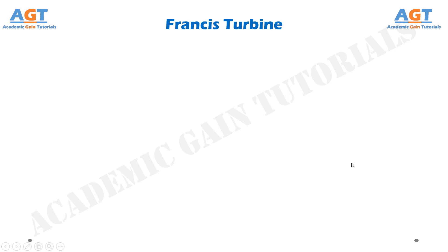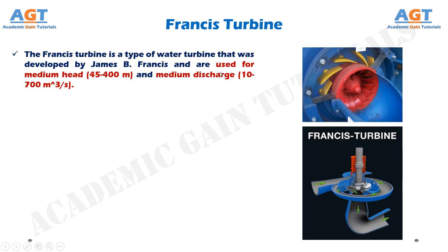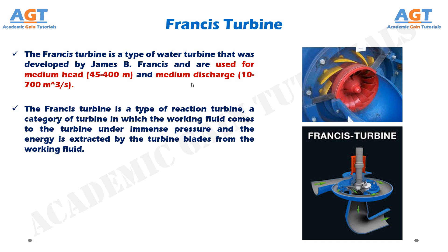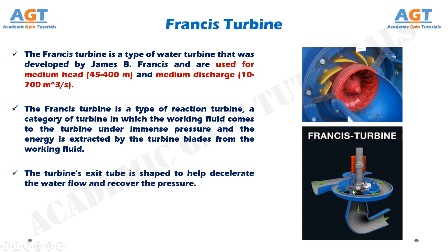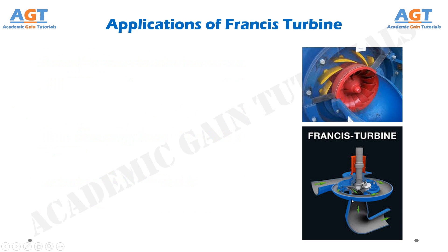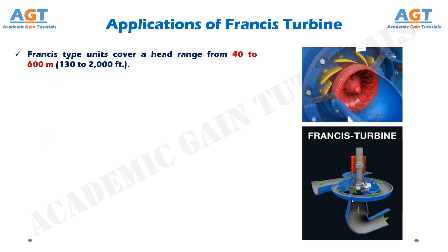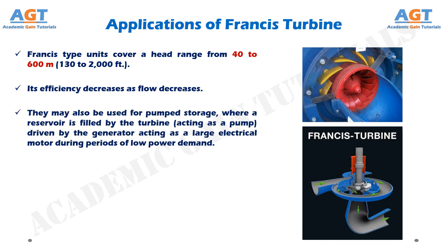The Francis turbine is a type of water turbine developed by James B. Francis, used for medium head of 45–400 meters and medium discharge of 10–700 cubic meters per second. It is a reaction turbine in which the working fluid comes to the turbine under immense pressure and the energy is extracted by the turbine blades. The turbine's exit tube is shaped to help decelerate the water flow and recover the pressure. Water flow is radial from exterior to interior. Francis type units cover a head range from 40 to 600 meters. Its efficiency decreases as flow decreases. They may also be used for pump storage, where a reservoir is filled by the turbine acting as a pump, driven by the generator acting as a large electrical motor during periods of low power demand.